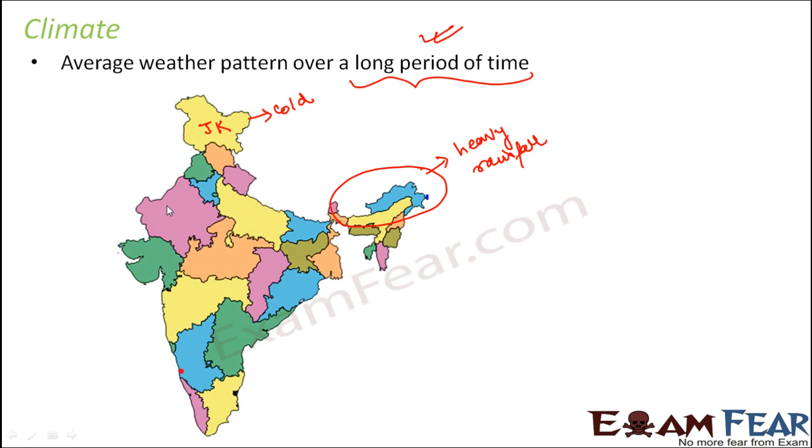So this has a cold climate. These places generally they are dry. Again, if you talk about the coastal areas, these are the coastal areas. So these coastal areas are generally humid.